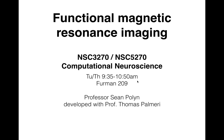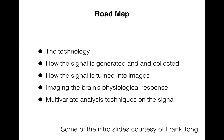This is going to be the first in a series of short videos going over the basics of functional MRI. Over the next few videos, each one I'm going to try and make a manageable chunk. We'll talk about the technology behind magnetic resonance imaging, how the signal itself is generated and collected, how that signal gets turned into images, and then how we use those images to examine the brain's physiological response to particular cognitive events.